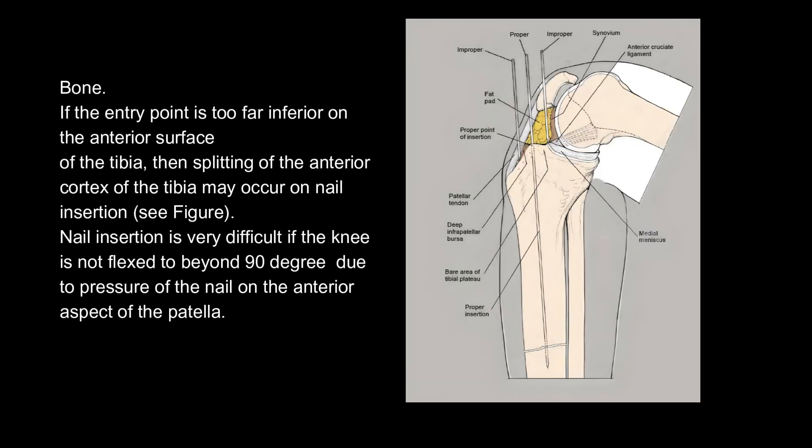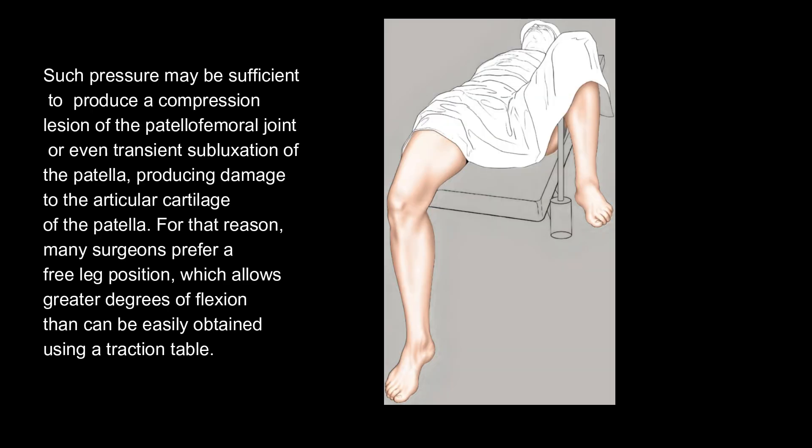Bone: if the entry point is too far inferior on the anterior surface of the tibia, splitting of the anterior cortex of the tibia may occur on nail insertion. Nail insertion is very difficult if the knee is not flexed beyond 90 degrees, due to pressure of the nail on the anterior aspect of the patella. Such pressure may be sufficient to produce a compression lesion of the patellofemoral joint or even transient subluxation of the patella, producing damage to the articular cartilage. For that reason, many surgeons prefer the free leg position, which allows greater degrees of flexion than can be easily obtained using a traction table.